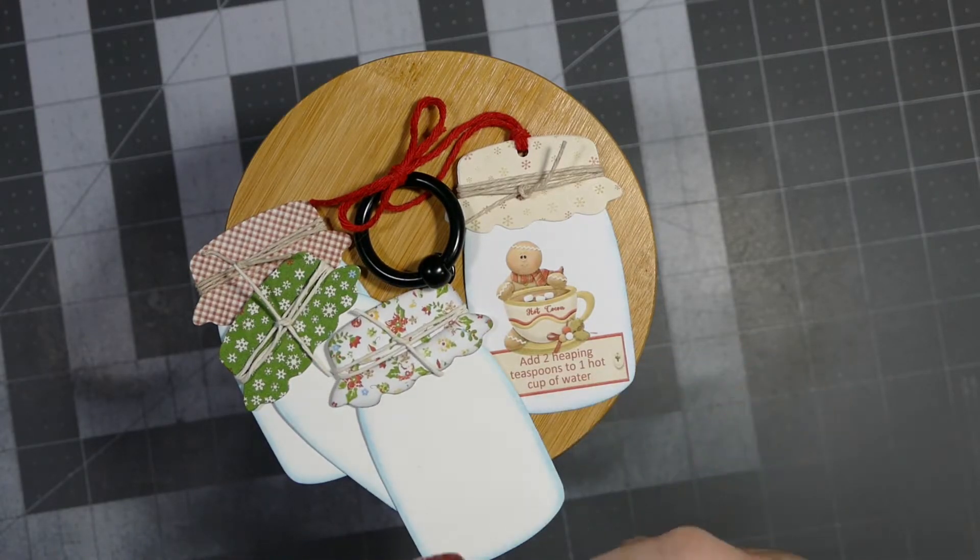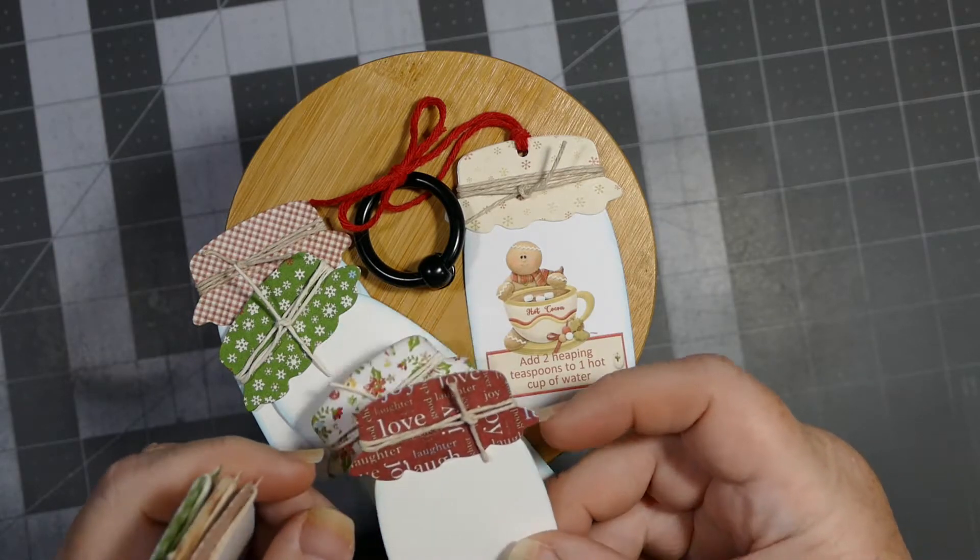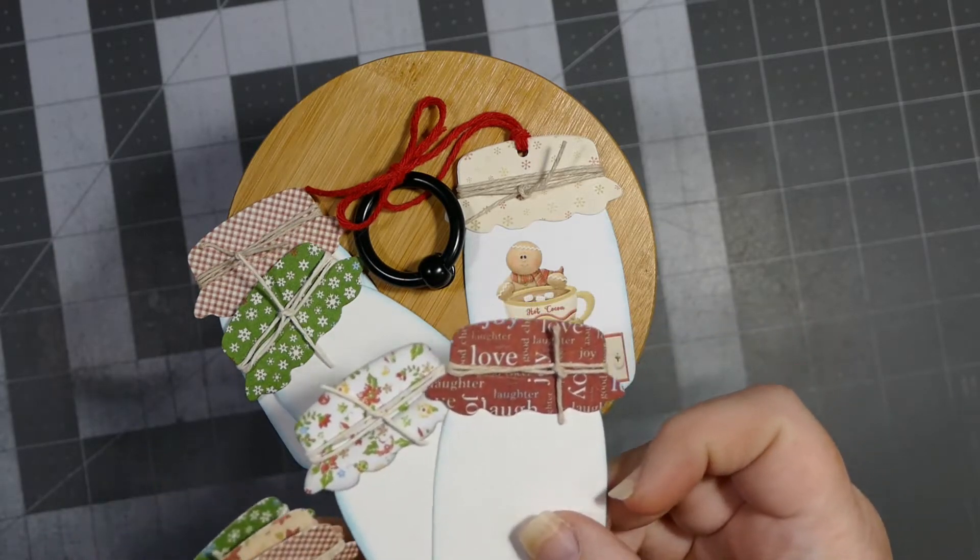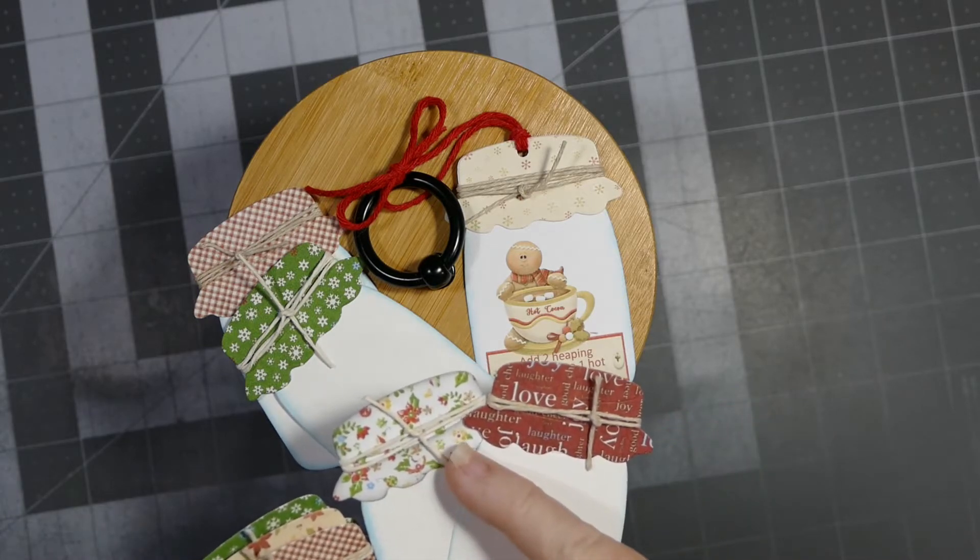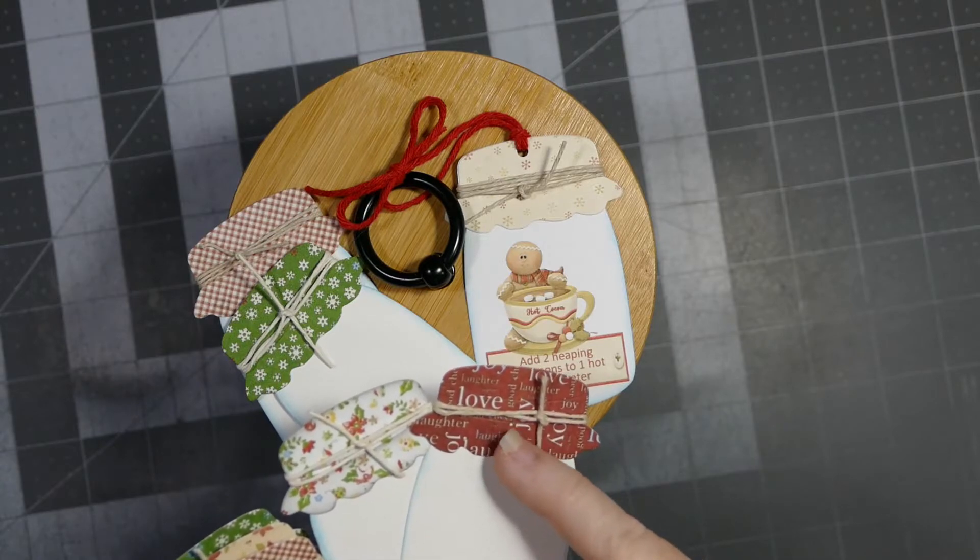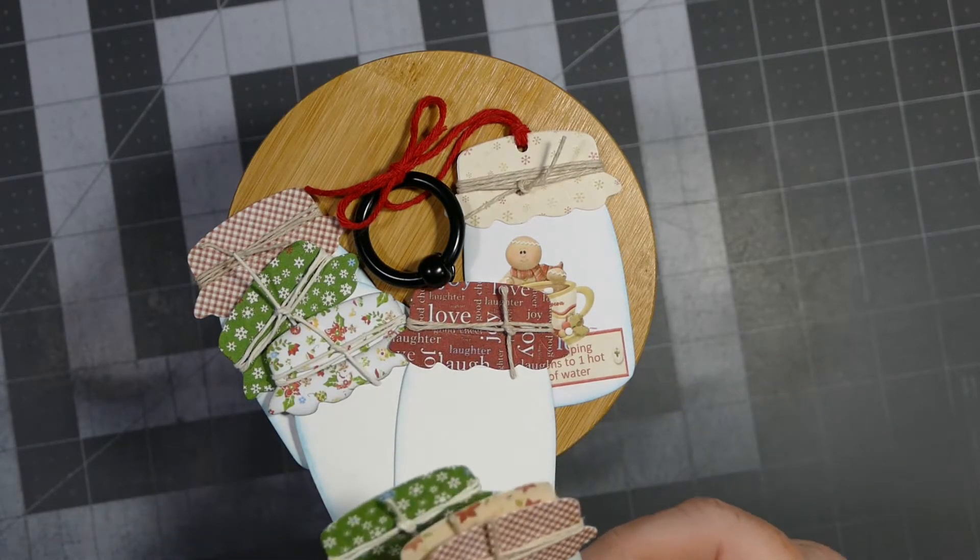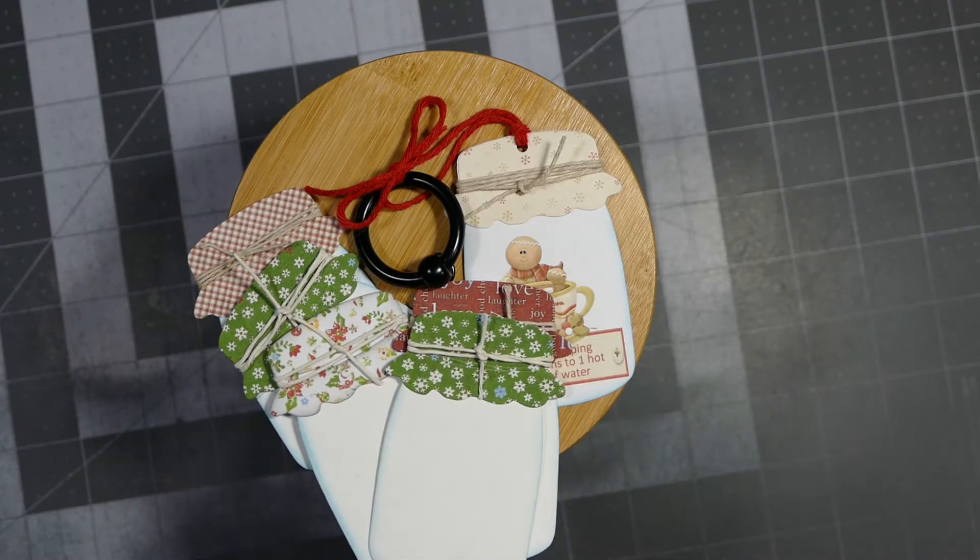And then I just wrapped the twine around. I have a couple - I have a white one, and there's the white looking one, and then there's the more traditional unbleached one. So they're all just a little bit different.